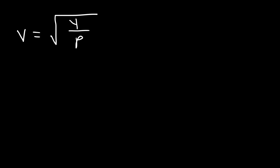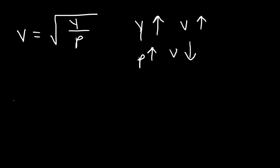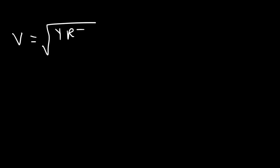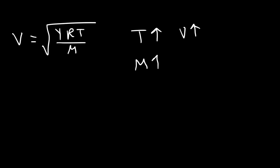The speed of sound in steel is the square root of Young's modulus divided by density. For materials with a very high elastic modulus, as that increases, the speed of sound increases; as density increases, the speed decreases. For liquids, speed depends on the bulk modulus and density — same relationship. In air, speed increases with temperature and is inversely related to the molar mass: as the molar mass of a gas increases, the speed decreases.